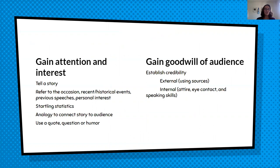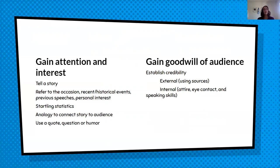Some ways to gain attention and interest: tell a story, refer to the occasion or recent or historical events, or reference previous speeches. If a classmate gave a speech on something, you can refer back to that — 'as we heard from Jill, I'm going to expand on that' — by talking about why you're personally interested in this topic. If you have any startling statistics, an analogy to connect the story to the audience, you can also use a quote, a question, or humor. But be careful about humor, because not everyone has the same sense of humor and there can be cultural differences. So I tend not to start off speeches with jokes, because you never know how well those are going to go over.